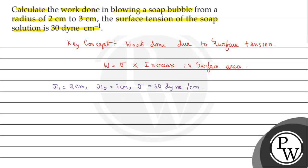The increase in surface area equals 2 multiplied by 4 pi multiplied by r2 squared minus r1 squared, which equals 8 pi times (r2 squared minus r1 squared), giving us 8 pi times (9 minus 4), which is 40 pi cm squared.